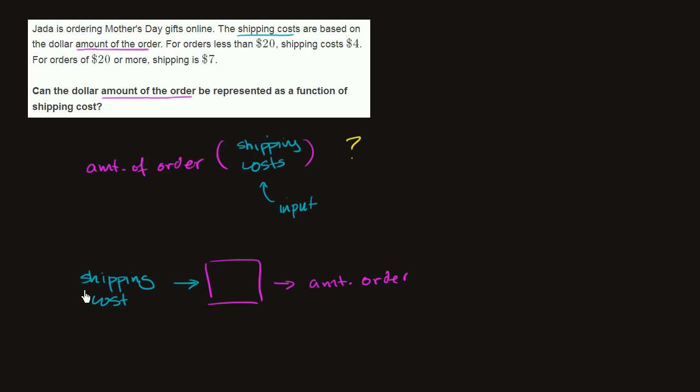So let's think about it. What are the possible inputs here? Well, there's only two possible shipping costs. Shipping costs are either going to be $4 or they're going to be $7.